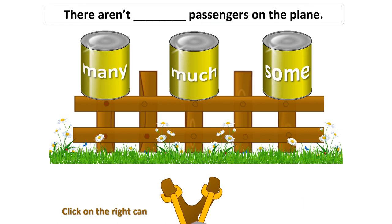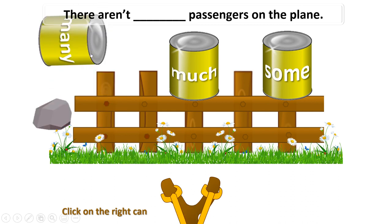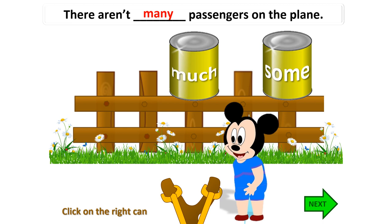Next: There aren't ___ passengers on the plane — many, much, or some? My choice is 'many,' because 'passengers' is a countable noun, so it must be used with 'many.' Listen and repeat: There aren't many passengers on the plane. Good job.